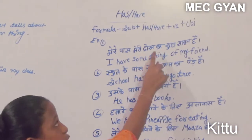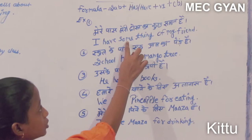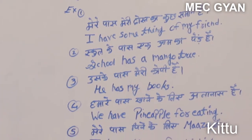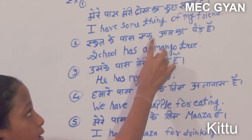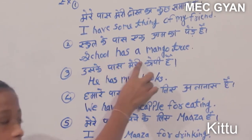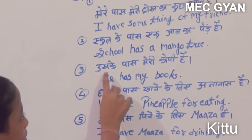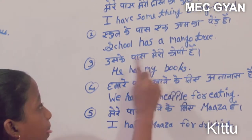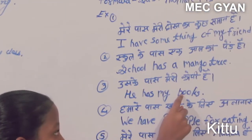Example: First, I have something for my friend. Second, school has a mango tree. Third, he has my books.